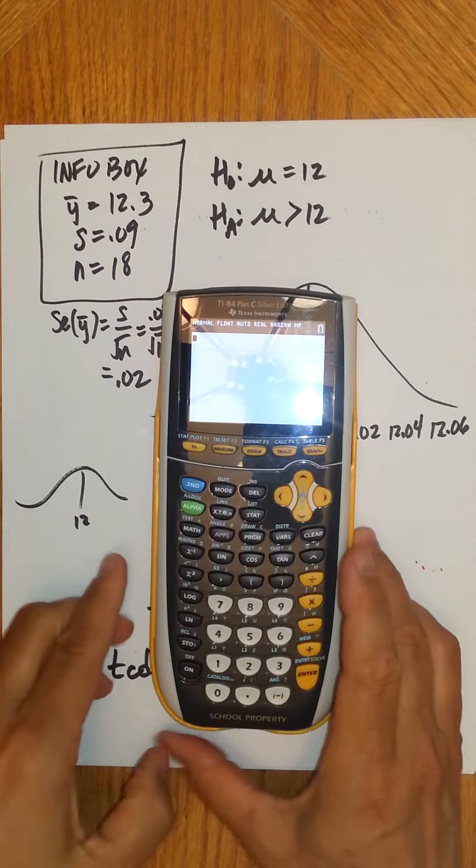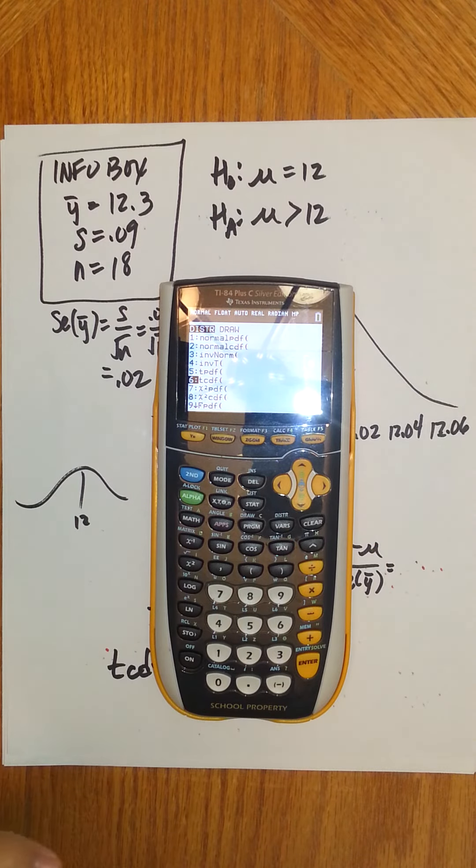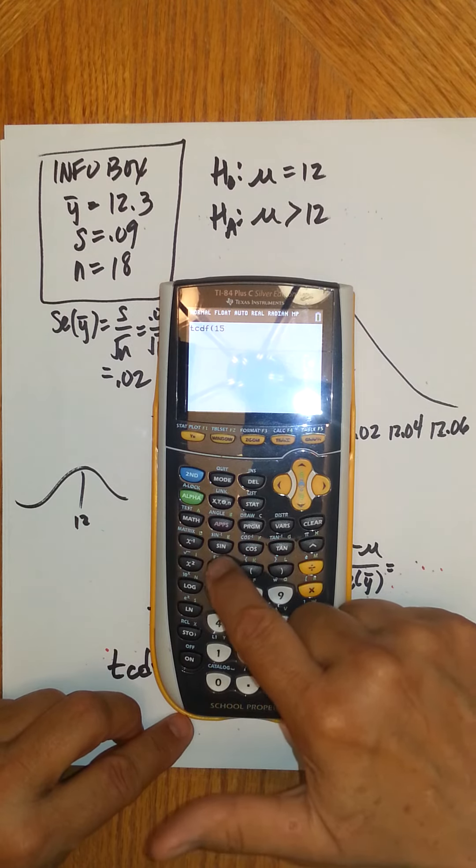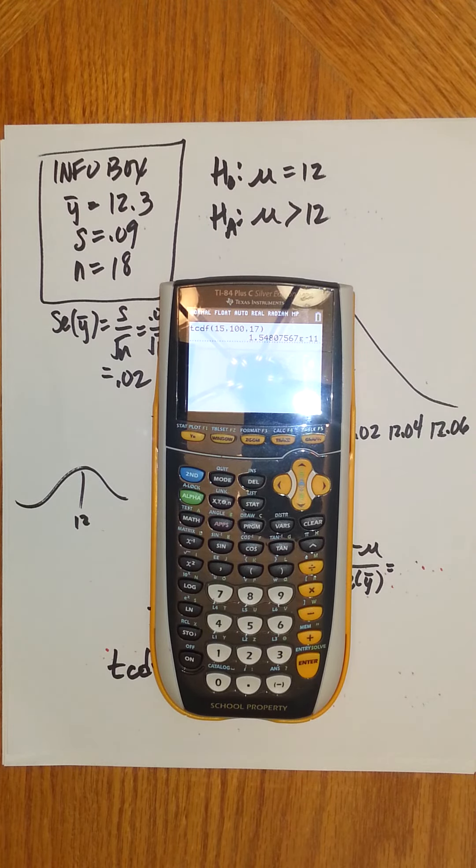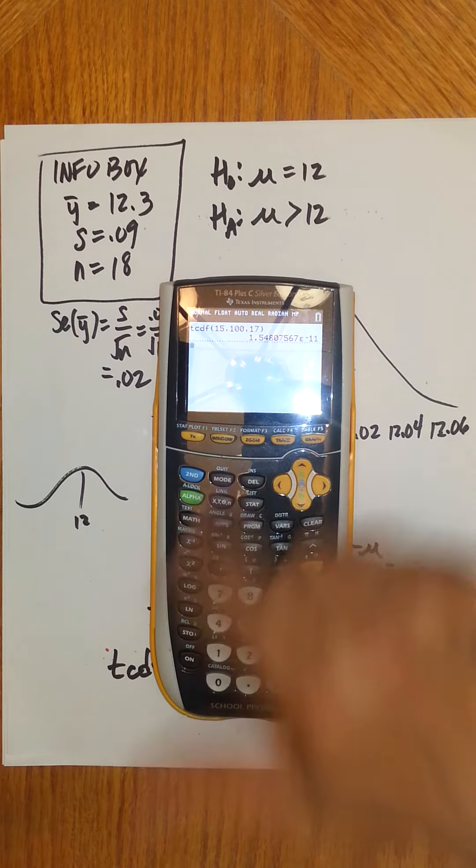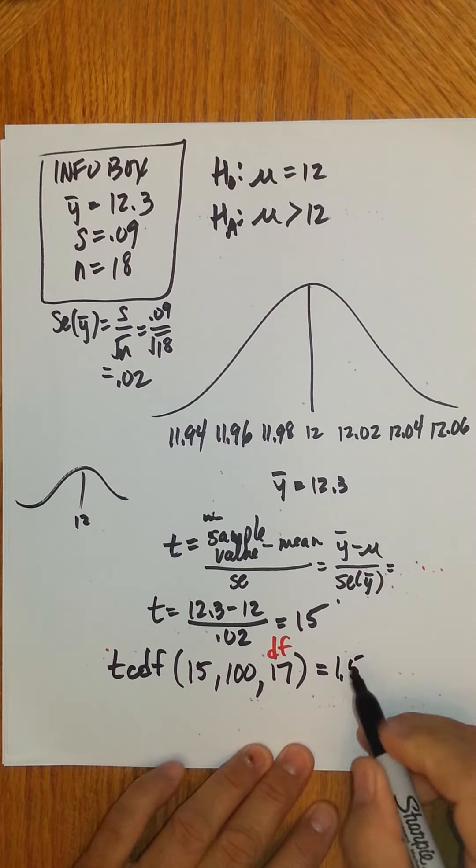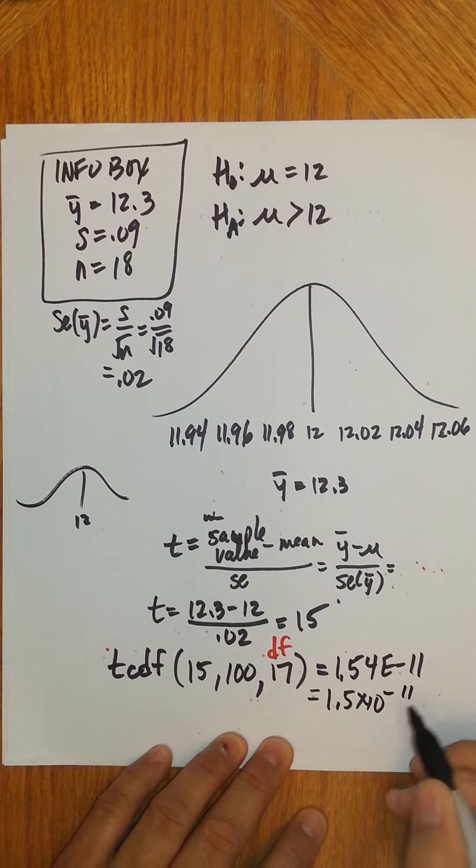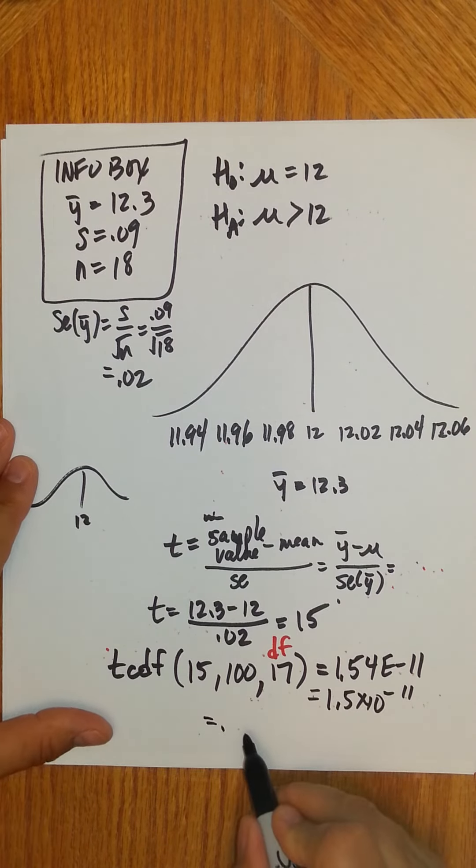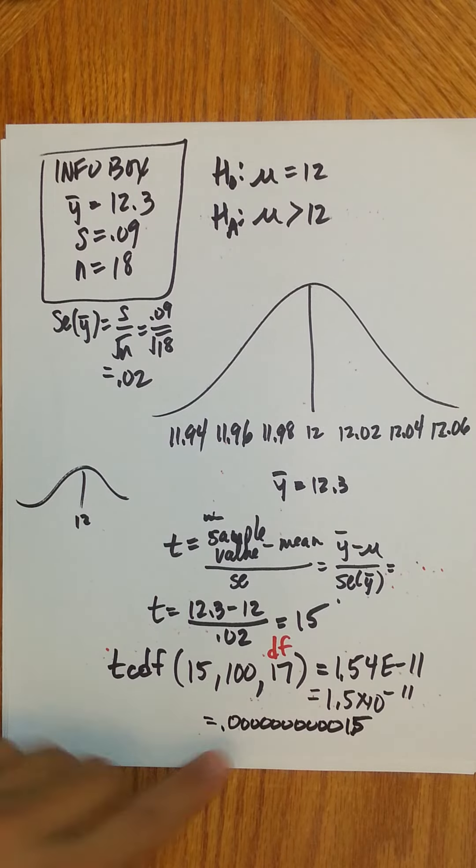We're going to go ahead and I'll do this on the calculator with you. We'll go to 2nd VARS. And we're going to go to TCDF. On different calculators, it might be item 5, 6, 7. But there it is, TCDF. And I want to go from 15, comma is above the 7, a hundred, comma, and then 17 is my degrees of freedom. And now press enter. What you can see is I get 1.548 e to the negative 11. Let's just say 1.54 e to the negative 11, which we know is 1.5 times 10 to the negative 11. Which, again, if I make that into a decimal, that's 10 zeros. So there's my decimal. So of course, that's what? Zero.